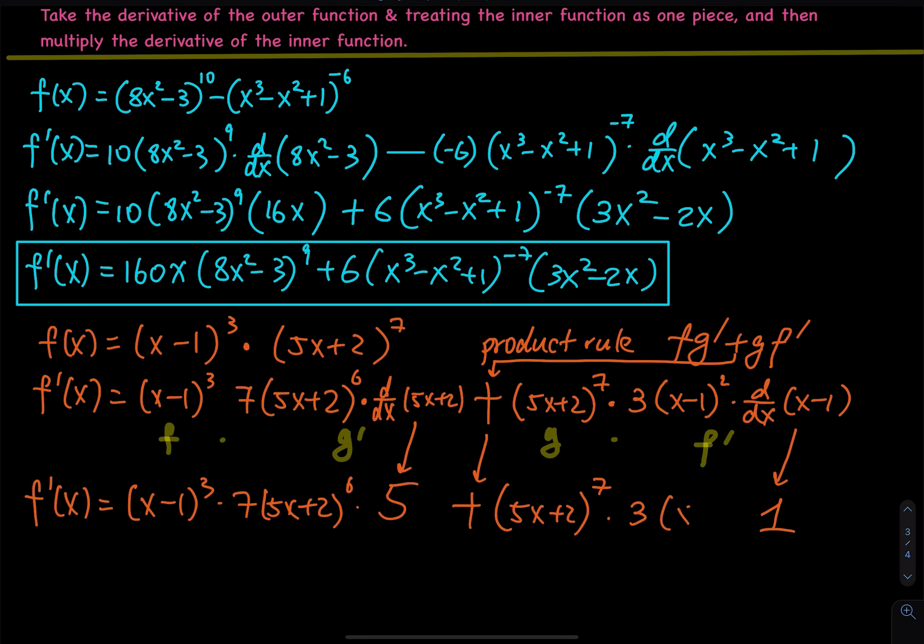And then we can multiply the 7 and the 5. So f prime of x equals 35 times x minus 1 to the third power, times 5x plus 2 to the 6th power, plus 5x plus 2 to the 7th power, times x minus 1 squared. This is my final answer to the second function. You might ask since we have a third, sixth, seventh, and second power, can we factor? The answer is yes, but I would just take this as my final answer.